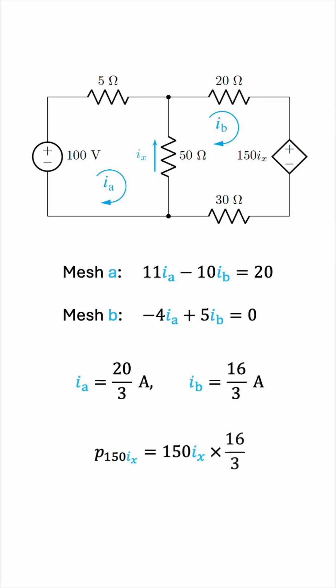Okay, Ib is 16 thirds, and remember, Ix is Ib minus Ia. The fractions have a common denominator. We can take 3 outside the brackets. 150 over 3 is 50. 16 minus 20 is negative 4. 50 times negative 4 is negative 200. And finally, negative 200 times 16 is negative 3200. So, the power is around negative 1067 watts.